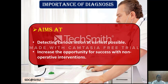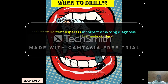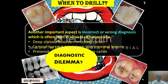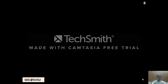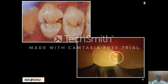The choice of treatment protocol lies in correct diagnosis. To prevent any unnecessary intervention, the diagnosis should be done with a view of detecting caries lesions at the earliest possible, which increases the opportunity for success with non-operative interventions. Another important aspect is to prevent incorrect or wrong diagnosis, which is often seen in clinical situations like deep stained fissures mimicking caries, cervical burnout mimicking interproximal lesions, and presence or absence of secondary caries, which always poses a diagnostic dilemma. Hence, there is a need for all of us to be aware of the recent trends in diagnosis of dental caries.